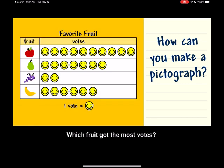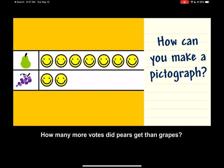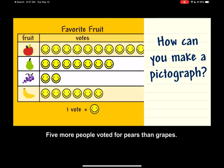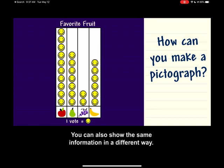Two people voted for grapes. Six people voted for bananas. Pictographs help organize and show data or information so you can understand it better. Which fruit got the most votes? Apple. How many more votes did pears get than grapes? Five more people voted for pears than grapes.